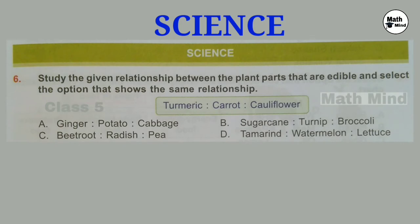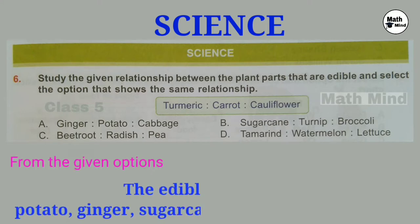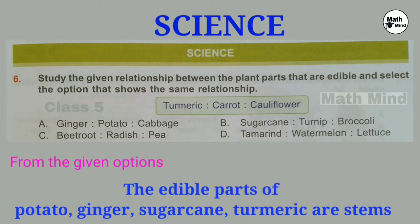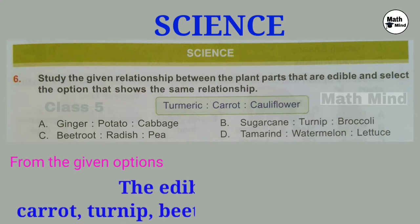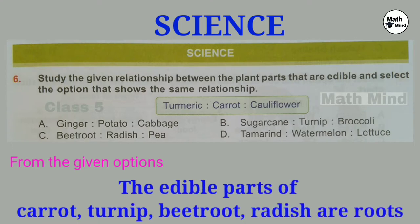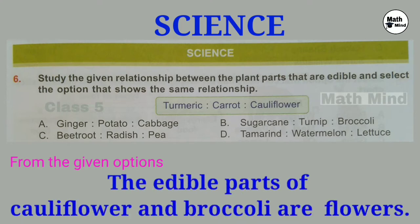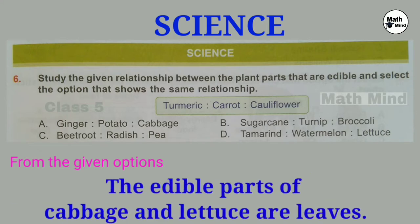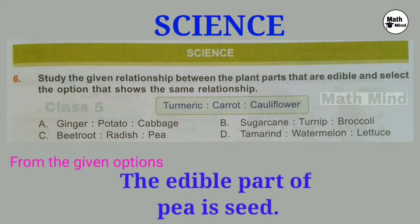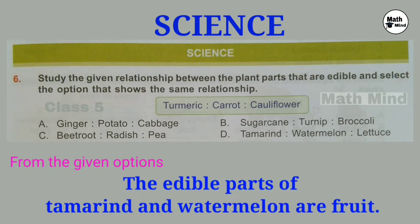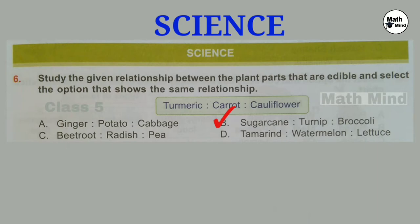Science. Question number 6: Study the given relationship between the plant parts that are edible and select the option that shows the same relationship. Turmeric, Carrot, Cauliflower. The edible parts of turmeric, ginger, potato and sugarcane are stems. The edible parts of carrot, turnip, beetroot and radish are roots. The edible parts of cauliflower and broccoli are flowers. So correct option is B.